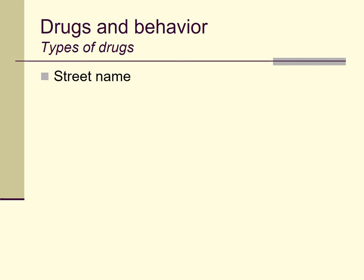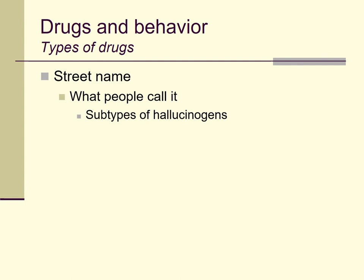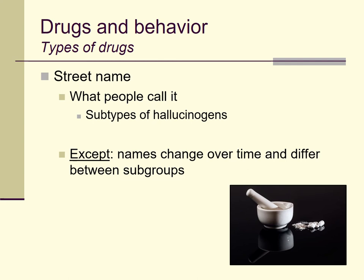One other way to classify drugs is by street name — what people call drugs when buying them, especially illegal ones. Various hallucinogens, for instance, are sometimes grouped together or given similar names. This works reasonably well, except that those names change a lot over time. The slang and common language used to describe different drugs is ever-evolving, and if we classified drugs strictly by what people called them, we would constantly be changing our classification system.